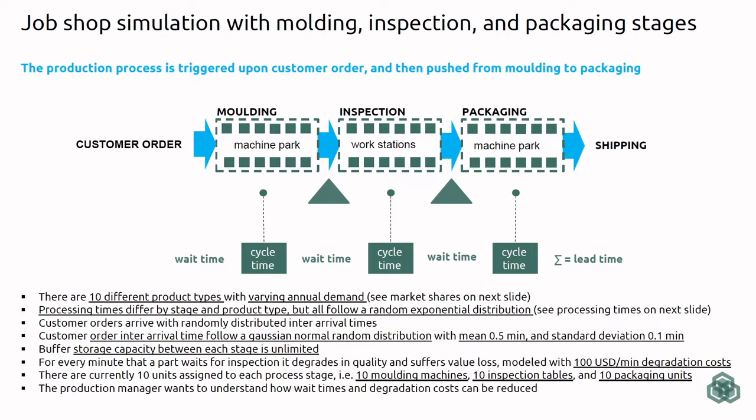Imagine a job shop that facilitates a production system with a molding process, an inspection process, and a packaging process. After packaging, we are shipping products to customers, and this entire production process is triggered upon receiving a customer order. There are buffers in between molding and inspection, and in between inspection and packaging. These buffers are mainly required if a station or a machine is not available for conducting the respective process.